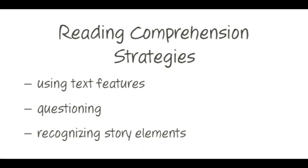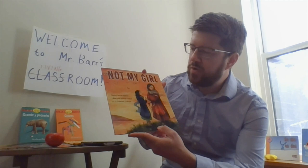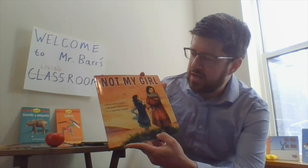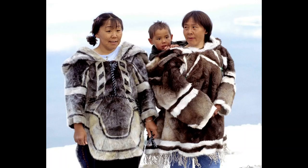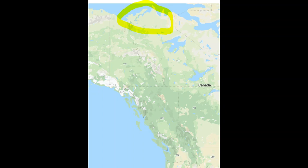The book we're going to be reading this week is called Not My Girl. It's written by Christy Jordan-Fenton and Margaret Pokiak-Fenton, and it's illustrated by Gabrielle Grimmer. Before we start reading, there are some really important things you need to know about the context of this book. The characters in this book are Inuits, which means they're a group of indigenous people that live in the Arctic regions near Greenland, Canada, and Alaska, where it's very, very cold.